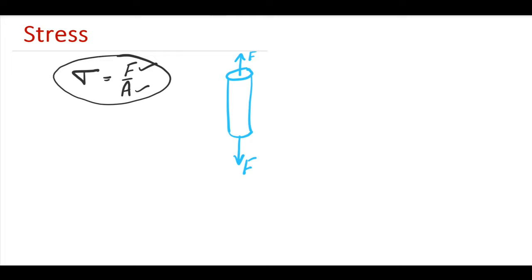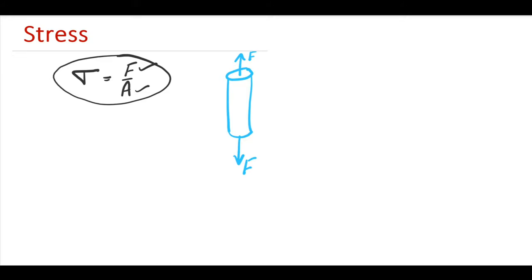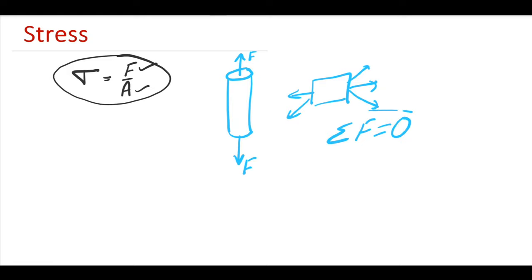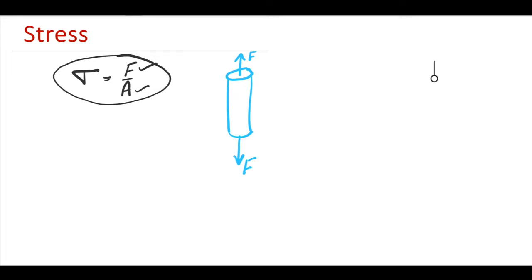First we have to understand that whenever we talk about the system of forces in strength of materials, we always talk about the equilibrium of the body. When the body is in equilibrium, that means all the forces acting on the body sum to zero. Otherwise, if it is not in equilibrium, the body will accelerate. When the body is in equilibrium, the forces acting on the ends will be equal.